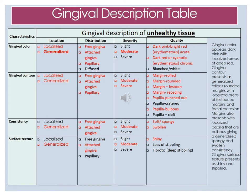The severity of gingival contour is moderate to severe. The quality shows that margins are rolled, rounded, festooned, and receding. The receding is found more in the localized area. For the generalized areas, we will see a lot of rolled and rounded margins. The quality of the papilla is punched out and bulbous, and those are more generalized.